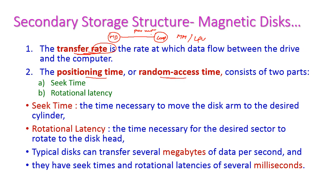Positioning time, also called random access time, consists of two parts. The first is seek time, which is the time taken to move the disk arm to the desired cylinder so that the read/write head reaches the correct data location.